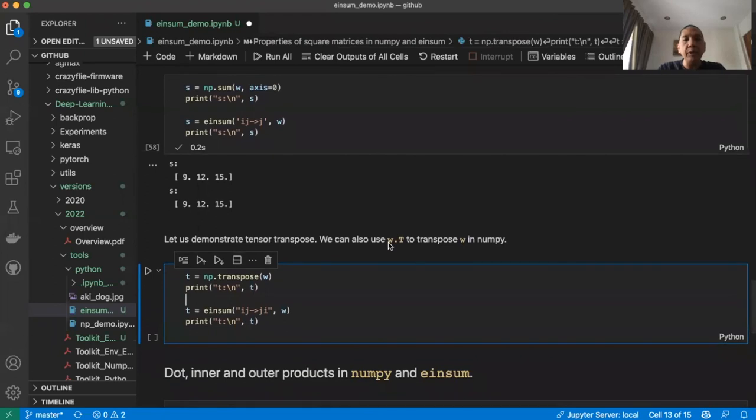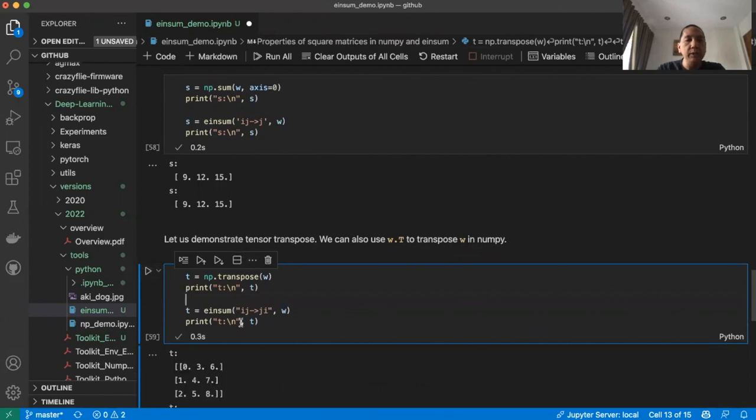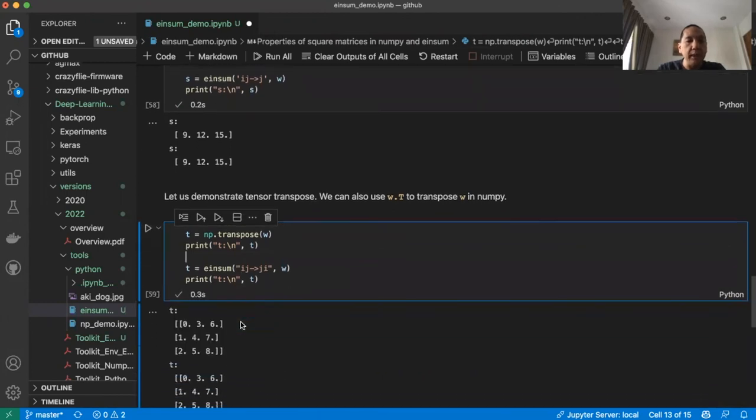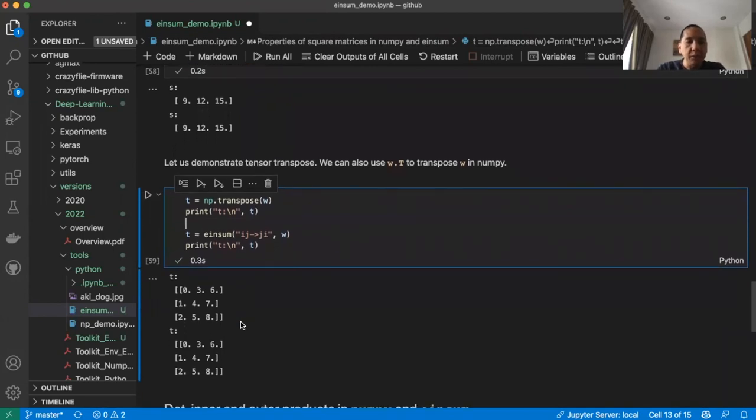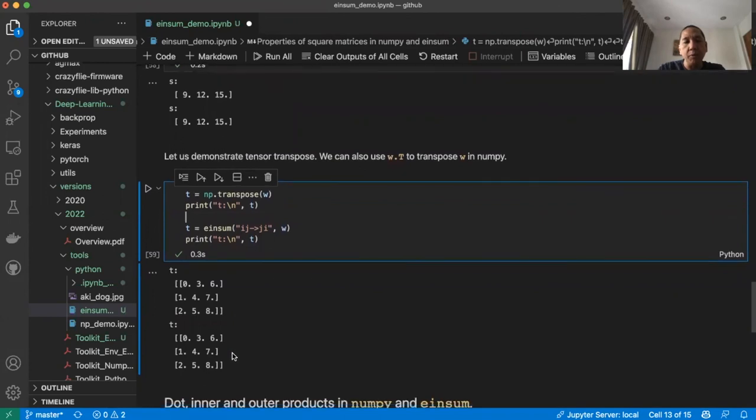Let us demonstrate tensor transpose. We can also use W dot T to transpose W in NumPy. This is transpose using NumPy transpose, and this is transpose also for EinSum. Notice that we get the same results.